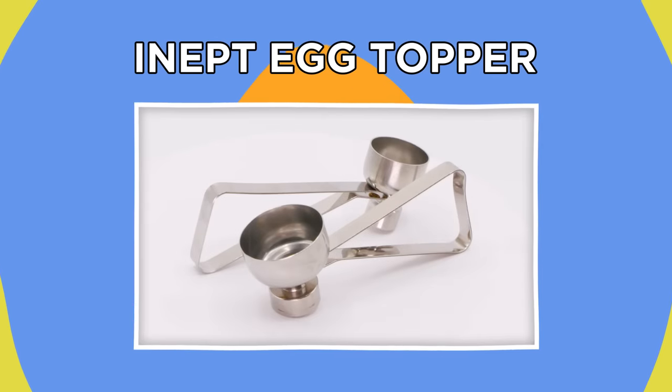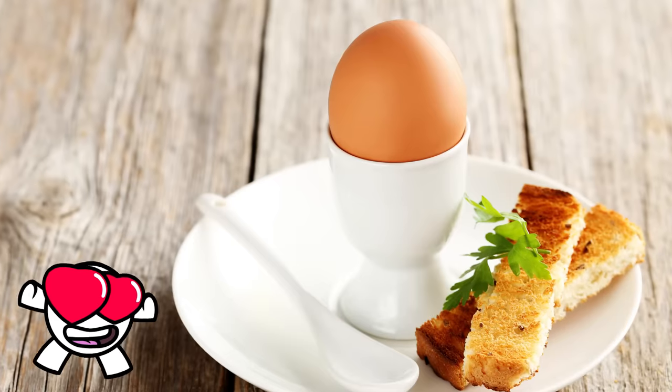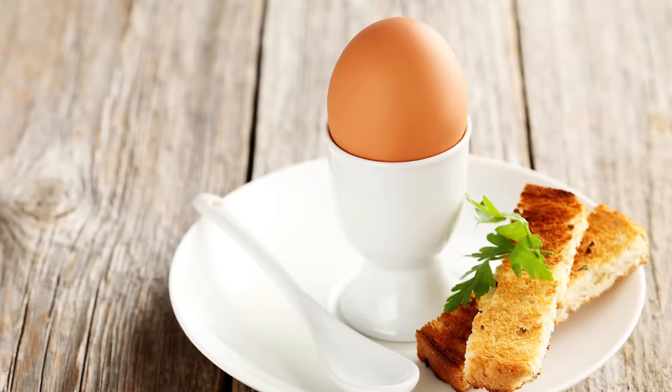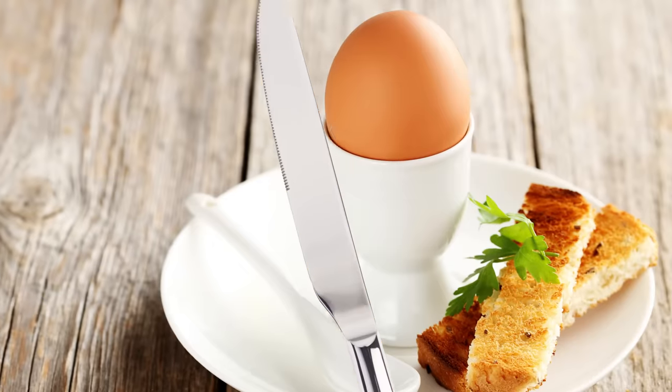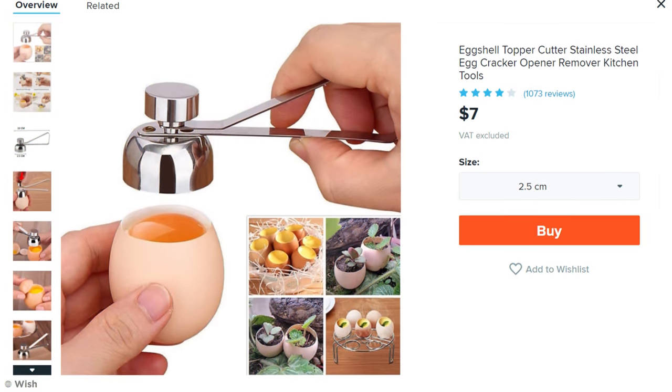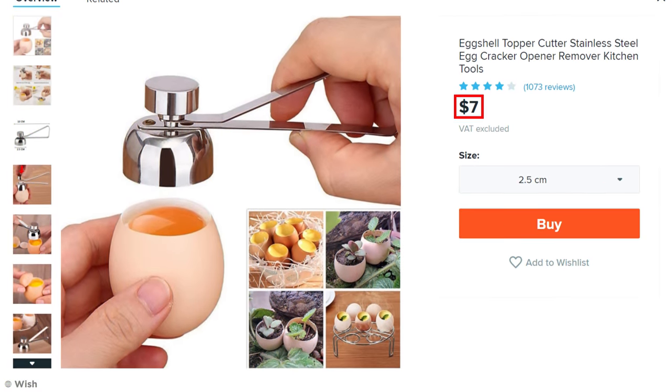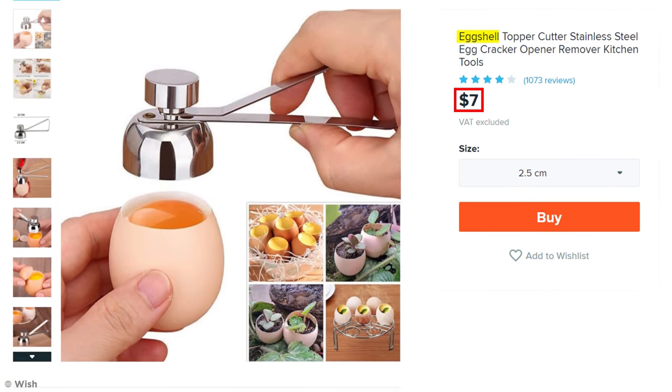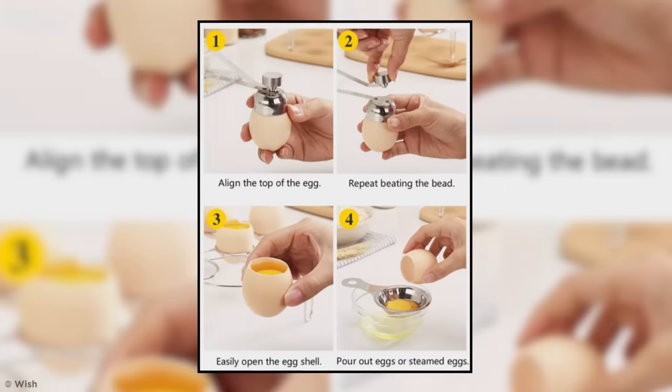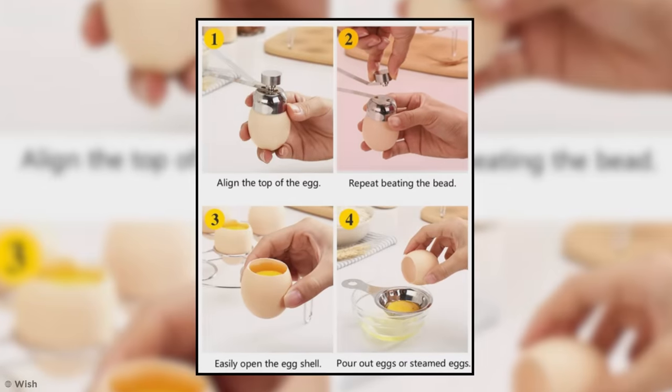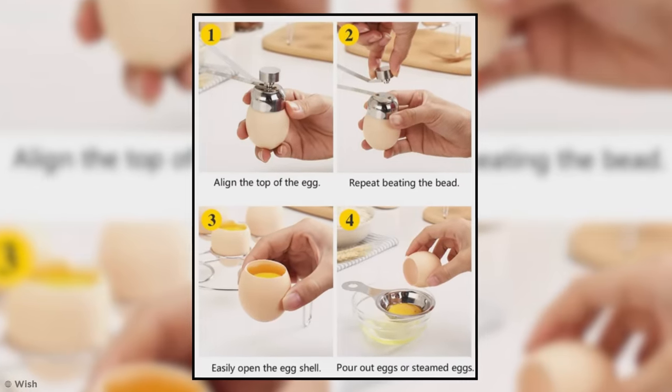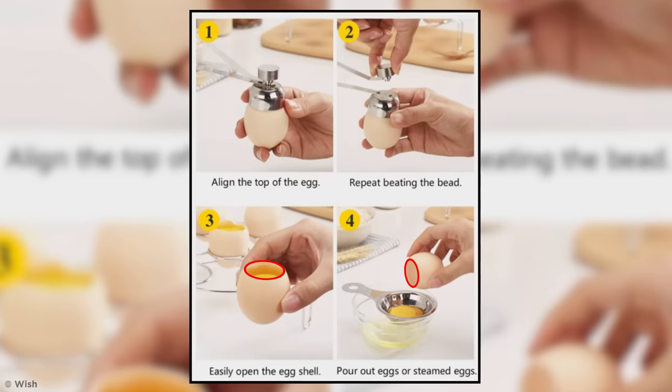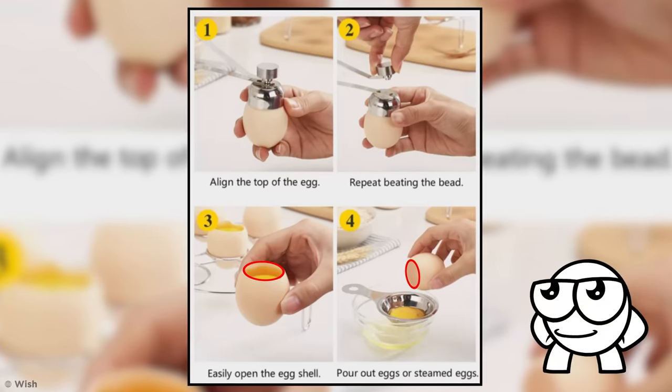Inept Egg Topper. I love a boiled egg and toast soldiers, a classic breakfast food. Now, most normal people just slice the top off the egg with a knife or spoon. But Wish offers a dedicated seven-dollar utensil for this task, an eggshell topper. Apparently all you need to do is repeatedly beat the bead on top of the egg and you'll be able to easily get to your egg through a perfectly circular opening. I like the neatness promised here, so I bought one to try it out.